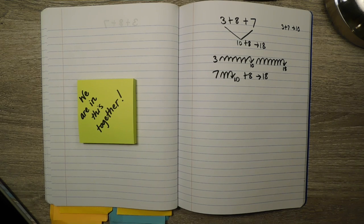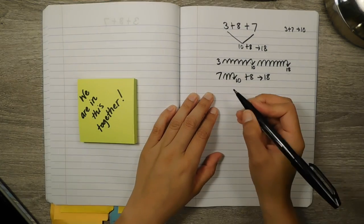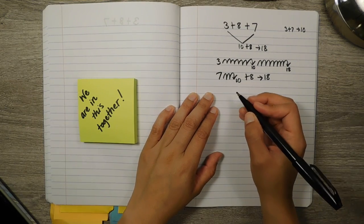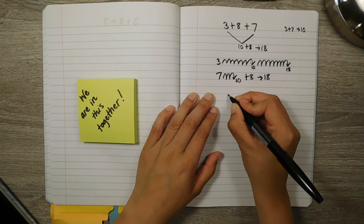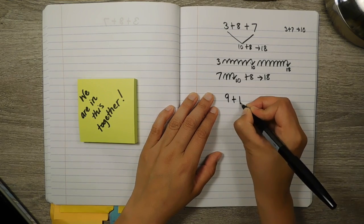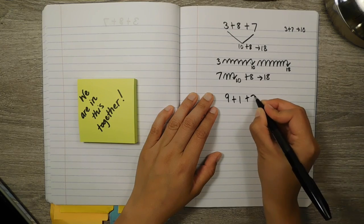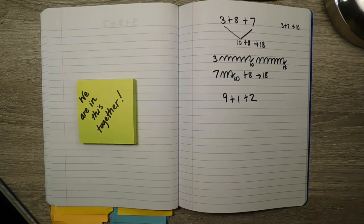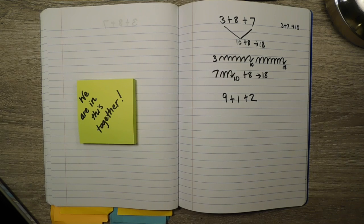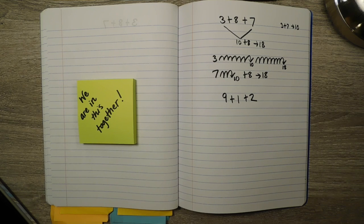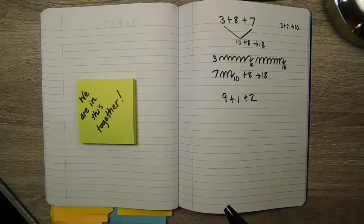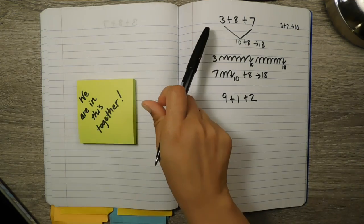So let's practice the next number sentence in our number string today. Okay, so let's see. We did 3 plus 8 plus 7. Now let's see what you can do with the number sentence 9 plus 1 plus 2. I know you all probably saw that in your head already. You don't even need to turn it off with the person next to you. But think in your head how your strategy for solving this number sentence might be similar or might be different to this number sentence.